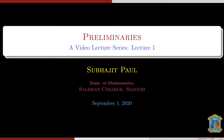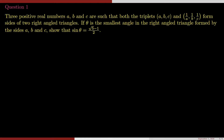Welcome to the first class. I'll be doing two interesting sums with you. The first question: three positive real numbers A, B and C are such that the triplets A, B, C and 1/A, 1/B, 1/C form the sides of two right-angled triangles. If theta is the smallest angle in the right-angled triangle formed by the first triplet A, B and C, then show that sine of theta equals (√5 - 1)/2.